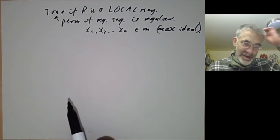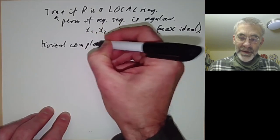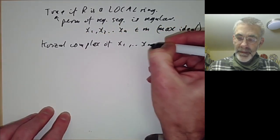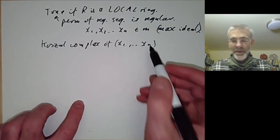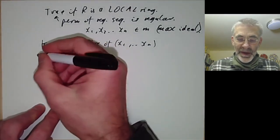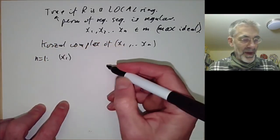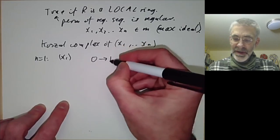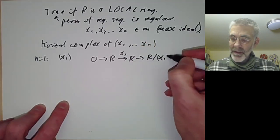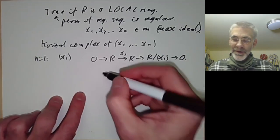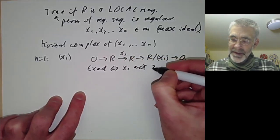To do this we will define the Koszul complex of a sequence. You can define the Koszul complex for any sequence, but it will only really be interesting if x1 up to xn is a regular sequence. For n equals 1, the Koszul complex is just: 0 goes to R, goes to R (here we multiply by x1), goes to R over x1, goes to zero. This is a rather obvious exact sequence, and it is exact if x1 is not a zero divisor.